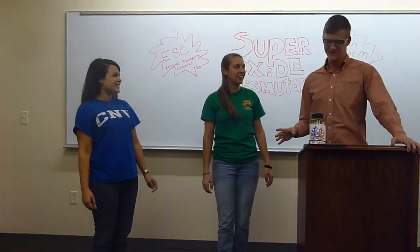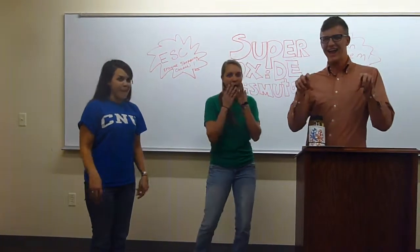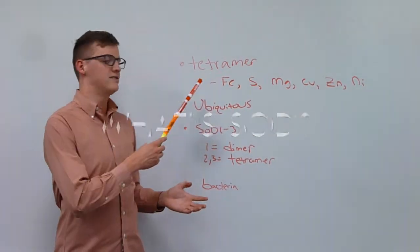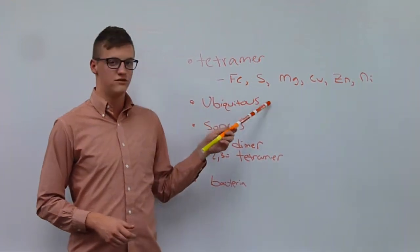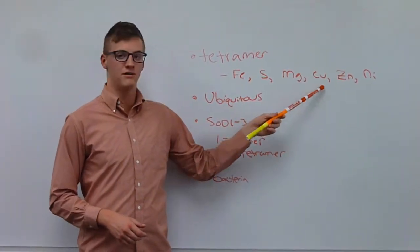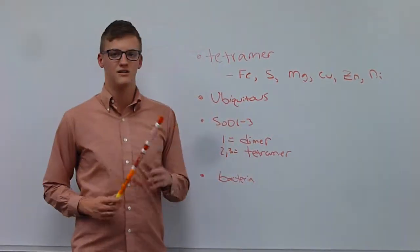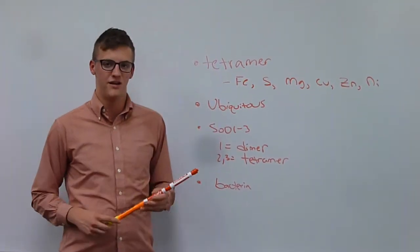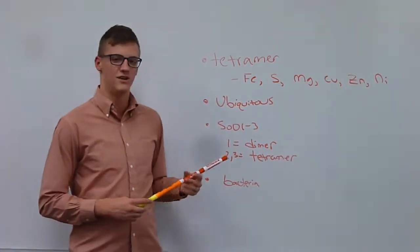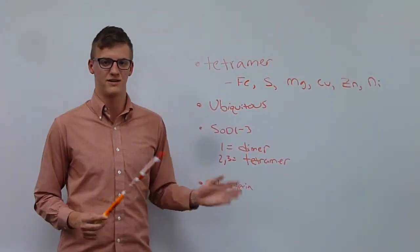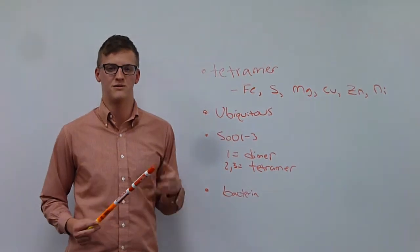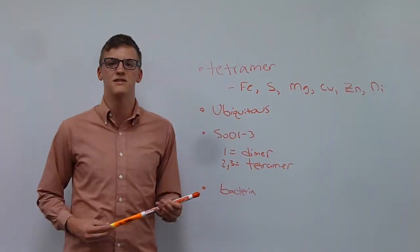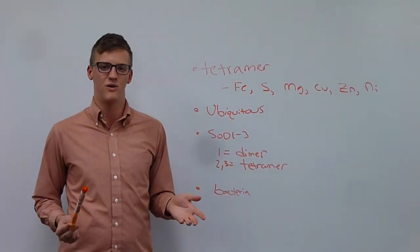Come with me and look at the structure — isn't it wild? SOD is a tetramer. It has a core of either iron, sulfur, magnesium, copper, zinc, or nickel. SOD is ubiquitous, meaning it's found in almost all mammals. There are three types of SOD: SOD 1 through 3. SOD 1 is a dimer; SOD 2 and 3 are tetramers. The only difference between them is where they're found, but mostly they're found in mitochondria. They're also used by bacteria to resist the superoxide made by white blood cells.